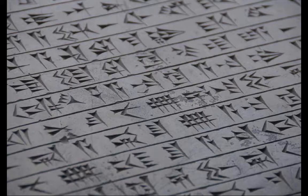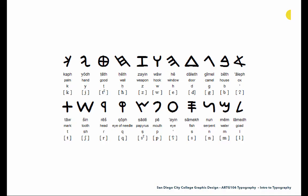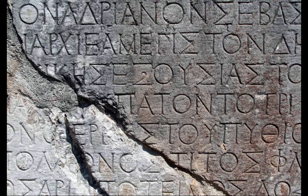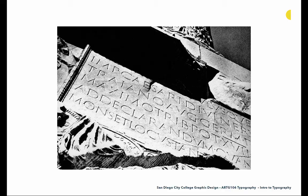Then we get to cuneiform — these wedge-shaped marks chiseled into soft clay, developed by the Sumerians. It initially started as an ideogram-based alphabet, but there is evidence that some of it evolved into a phonetic alphabet. Eventually it was taken over by Phoenician, which is the first actual phonetic alphabet that we find — starting with ideogram and pictorial-based writing but evolving into a completely phonetic alphabet that is the basis of the alphabets we use today in Western culture. This then evolved into Greek, and eventually into the Roman forms that we know today.